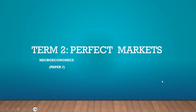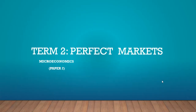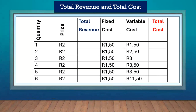Welcome to Perfect Market. We start off by looking at the total revenue and the total cost. The way we calculate the total revenue is we multiply the quantity of items sold by the price.